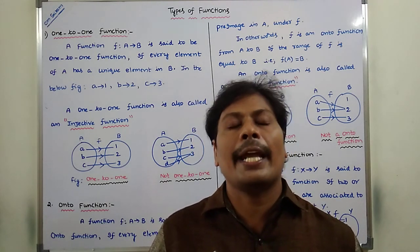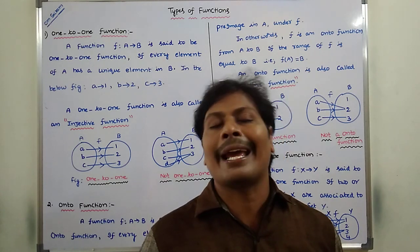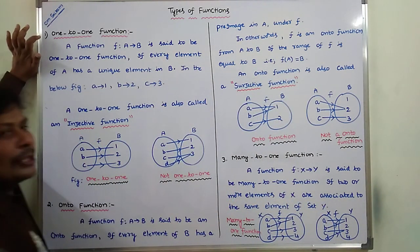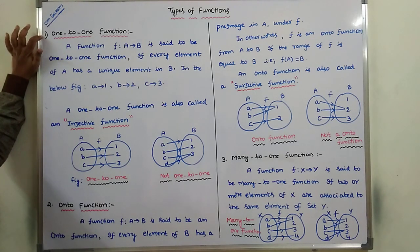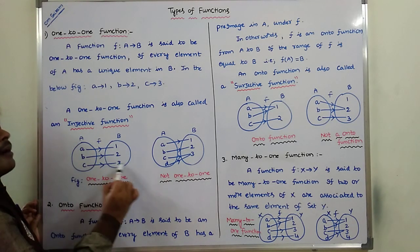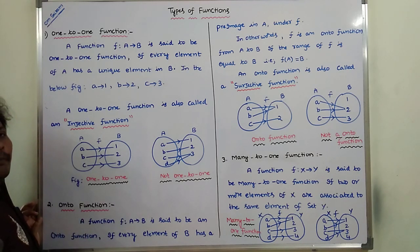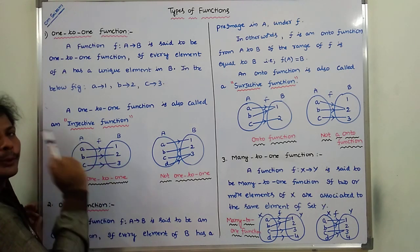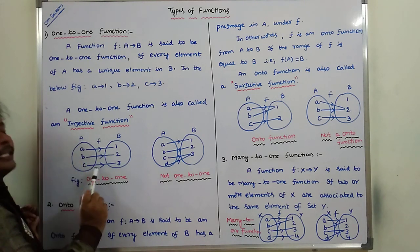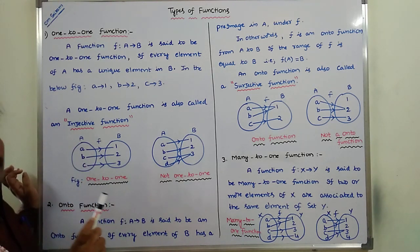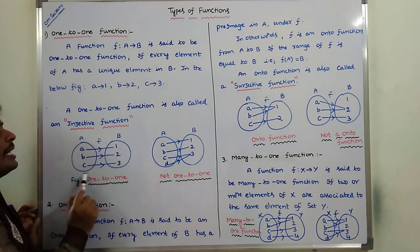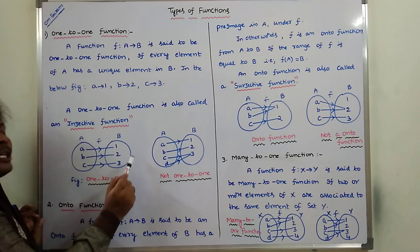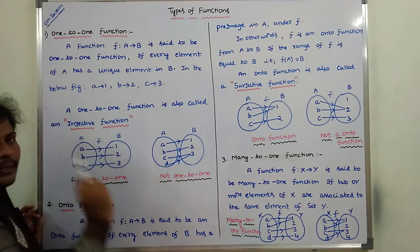We will go through each and every function with one example. So the first one is a one-to-one function. Let A and B be two sets. A function f mapping from A to B is said to be a one-to-one function if for every element of set A, there is a unique element in set B.